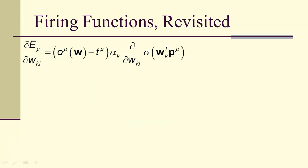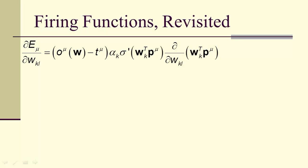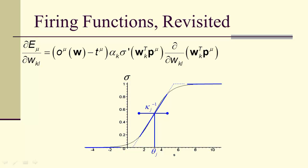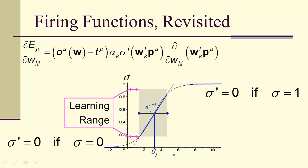Now, we're taking the derivative. And so we take the derivative and we get our difference between the outputs and the patterns times alpha sub k times the derivative. And that's just going to be sigma prime times the derivative of W sub k transpose P sub mu. And notice that sigma prime has the property that when sigma is zero, then the derivative is zero. And when sigma is one, the derivative is once again equal to zero. So therefore, the learning range is in between. It's the linear domain where we have the learning range. The extremes drive the derivative equal to zero.